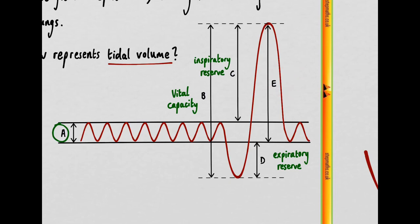Moving on to E, well this is like the inspiratory reserve except it includes normal inspiration within the tidal volume so this is termed the inspiratory capacity.